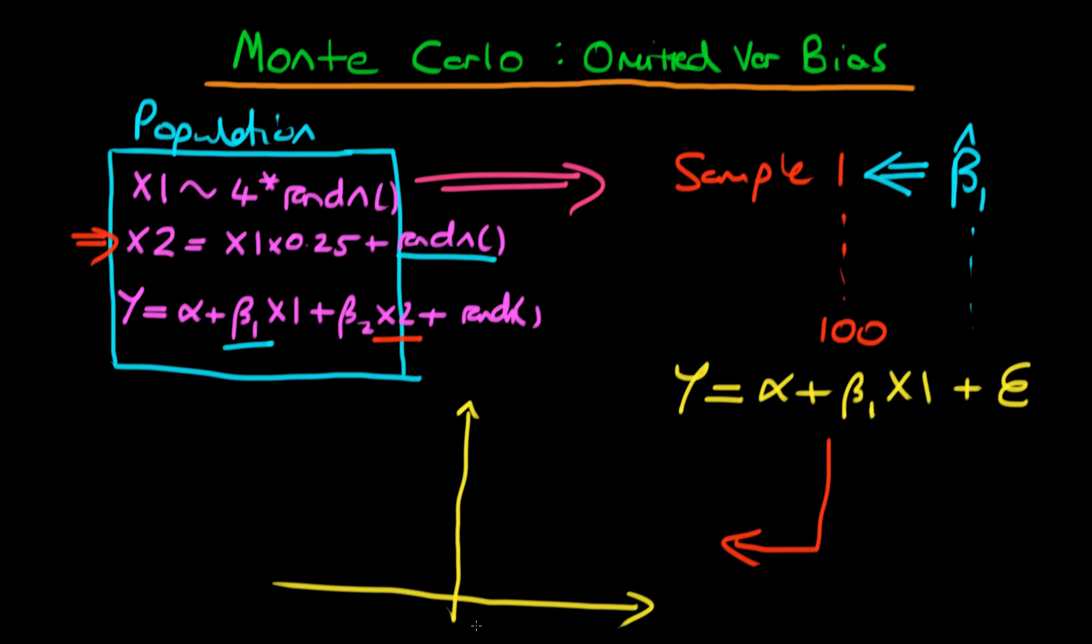So the true value of beta 1 might be something like this in the middle of our domain here, and the y-axis here is the frequency. But because we've omitted this important factor, our sampling distribution is actually going to be skewed upwards of beta 1. So it's not going to be an unbiased estimator.